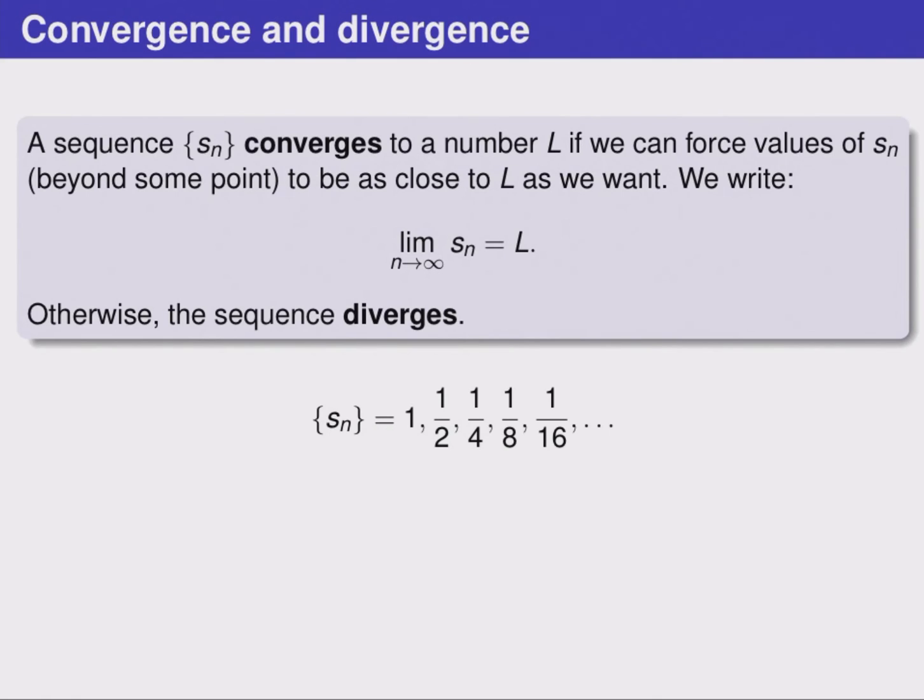The sequence S sub n below, starting 1, one-half, one-quarter, and so on, converges because we can see that its terms are eventually going to get as close as we want to zero, and they'll stay within that tolerance, getting closer and closer to zero. So we would write that the limit as n goes to infinity of this term, S sub n, is equal to zero.